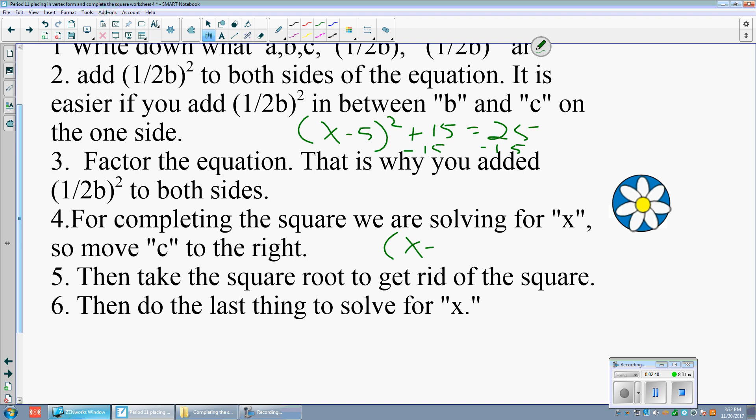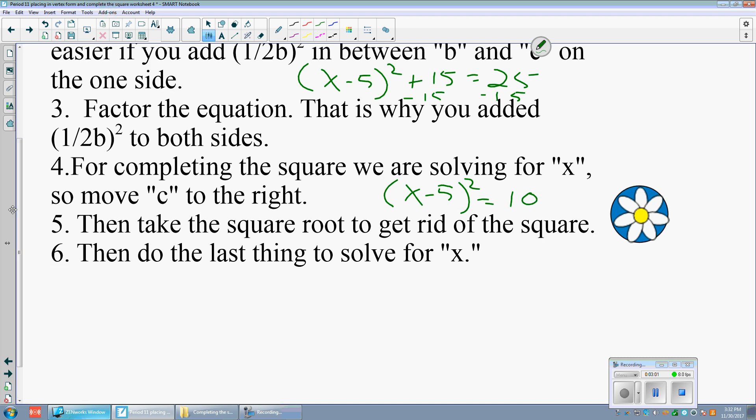So we get x minus 5 quantity squared equals 10. Now, take the square root of both sides to get rid of the square. When we take the square root of this side, we're left with x minus 5. I don't want to put it in parentheses. Now, when you take the square root of something, we have to understand that it's the positive or negative value of it.